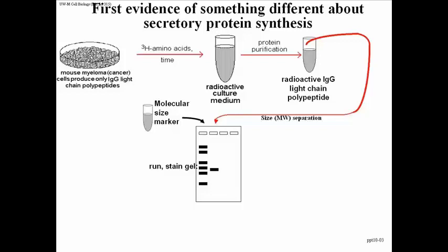The cells have been growing in the medium for quite a while and have produced a lot of IgG, which is enough to be picked up by staining the gel. The small amount made radioactive during a brief labeling period — say, a half hour or an hour of culture — will also appear as radioactive IgG. It will be obvious why we want that in a moment.